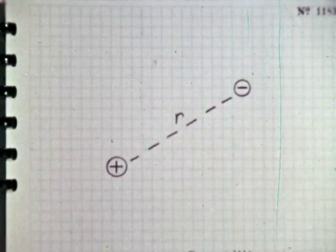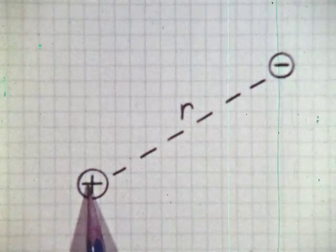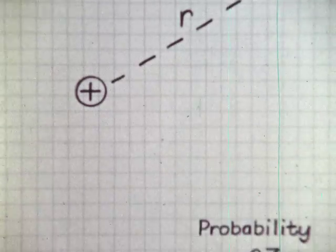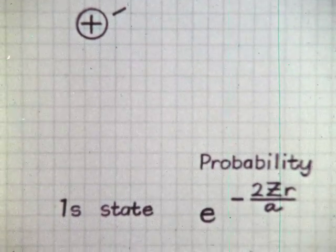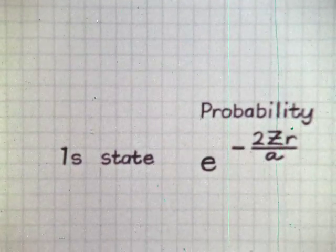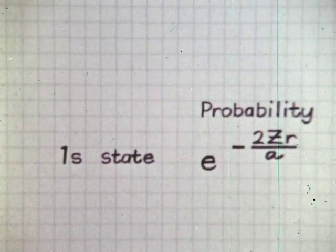One such property is the location of the electron relative to the nucleus. What can we learn from quantum mechanics about this? To answer this question, we will consider the 1s state, the lowest and most stable energy state of the hydrogen atom. Quantum mechanics gives the results only in terms of probability.